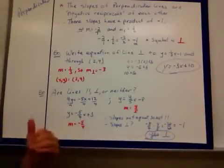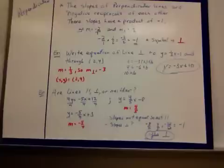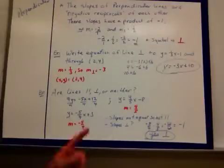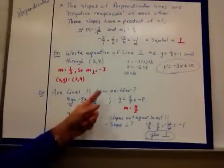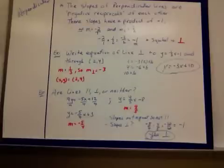But if they're not, so they're not equal, they don't give you negative 1, they're not negative reciprocals, then the answer would be neither. So parallel, same slope; perpendicular, negative reciprocal, different.